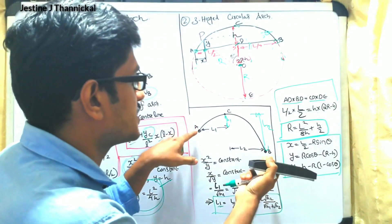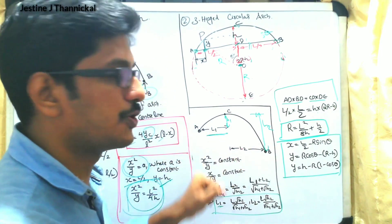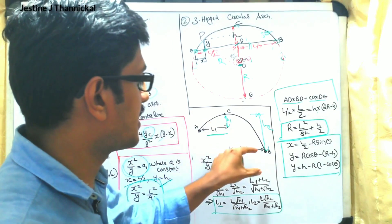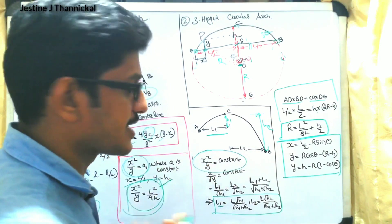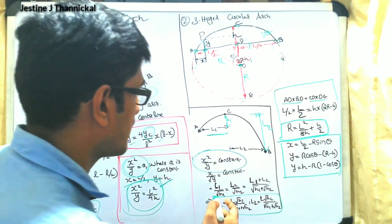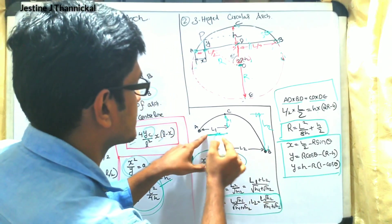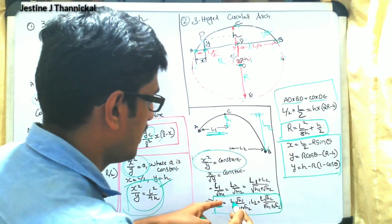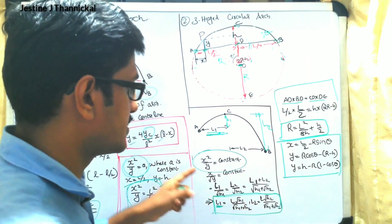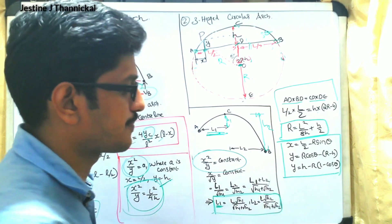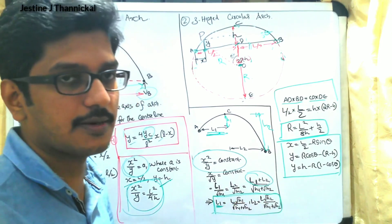Next, we consider the case when points A and B are at different levels. The horizontal distances become l1 and l2, and the heights are h1 and h2. Using the previously derived expression x² / y = constant and substituting all values, l1 equals l × √h1 / (√h1 + √h2). Setting l1 + l2 = L gives the general expression. These are the key terminologies related to the parabolic arch.